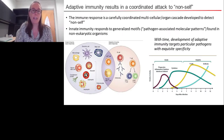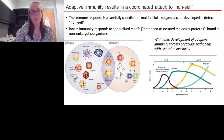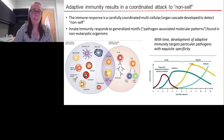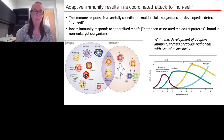Just to bring everyone up to speed so that we're all speaking a common language: the immune response is a carefully coordinated multicellular and multi-organ cascade developed to detect anything that's non-self. This includes pathogens, parasites, as well as what could be considered non-self cells such as cancer. Broadly, the immune system is divided into two arms, the innate and the adaptive arm. Innate immunity is quite rapid, and it responds to generalized motifs called pathogen-associated molecular patterns — molecular patterns found in non-eukaryotic organisms, carried out by the cells represented in the purple circle in that overlapping Venn diagram on the bottom left.